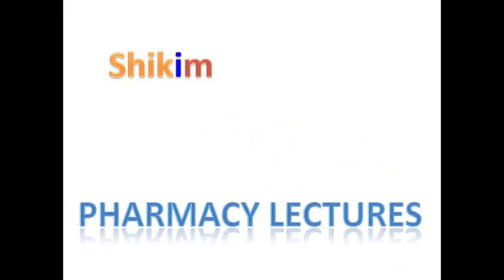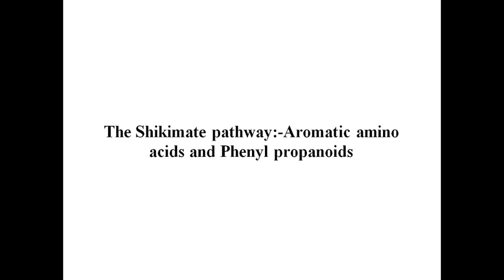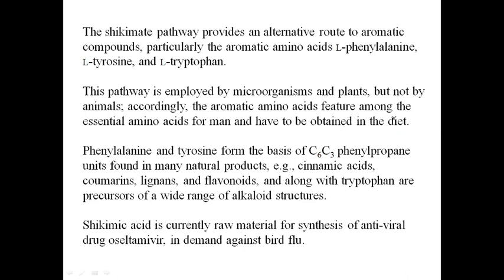Welcome to pharmacy lectures. Today we are going to discuss the shikimate pathway and how various aromatic amino acids are produced from it. The shikimate pathway provides an alternative route to aromatic compounds. The three aromatic amino acids produced are L-phenylalanine, L-tyrosine, and L-tryptophan. This pathway is particularly employed by microorganisms and plants only — animals cannot utilize this pathway and must obtain these amino acids from their diet.